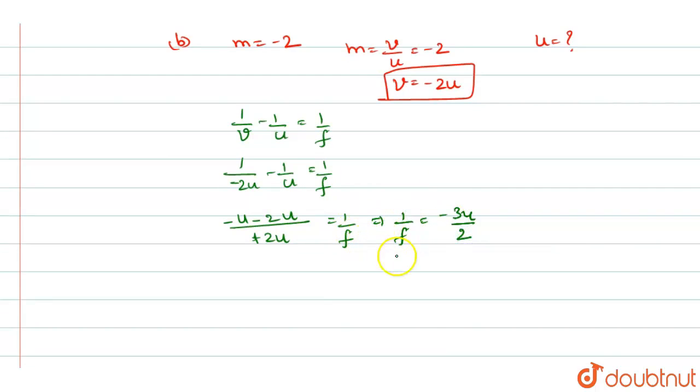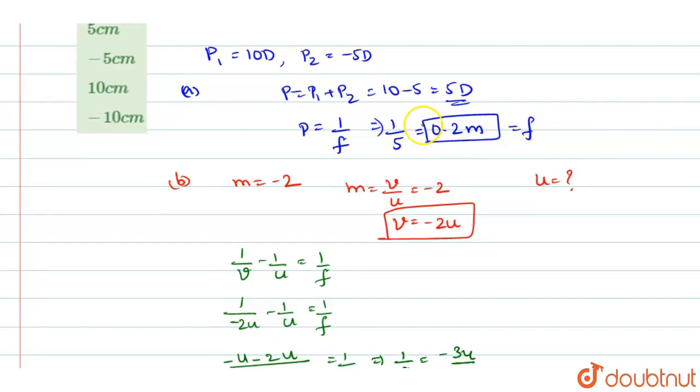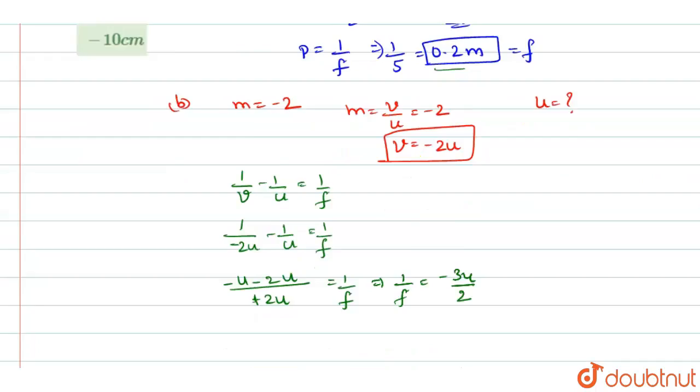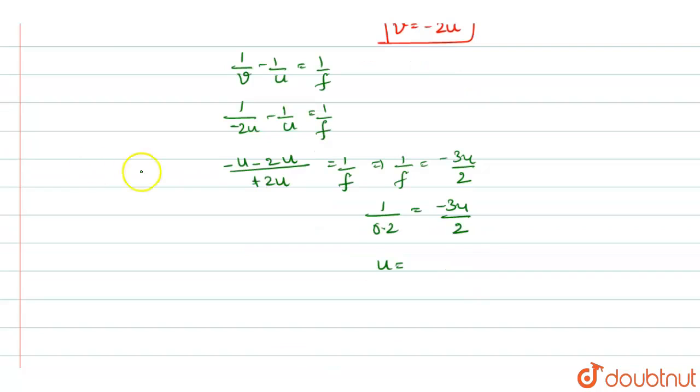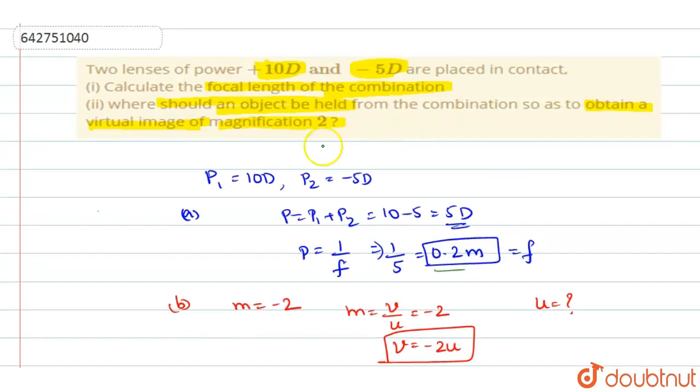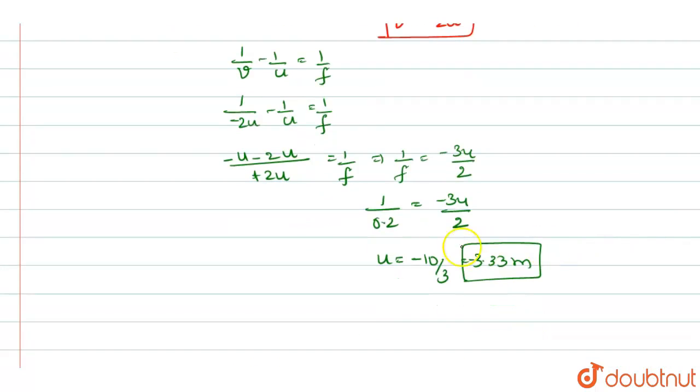F value we know. F value we have calculated as 0.2 meter. So we will substitute that. So it will be 1 by 0.2 is equal to minus 3 U by 2. So from this you will get the value of U as minus 10 by 3 or minus 3.33 meters. So this will be the object distance. The object should be placed at 3.33 meters from the Lens.